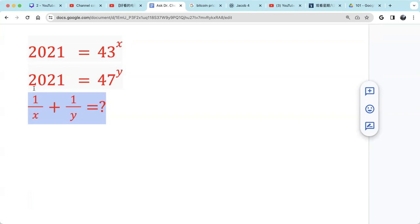Well, how do we construct 1 over x plus 1 over y? We see from those equations, we can raise both sides by 1 over x. Then we will get 43 equals 2021 raised to 1 over x. And here both sides we want to raise by 1 over y. Then we have 2021 raised to 1 over y equals 47.